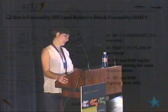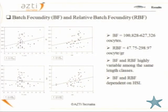Finally, regarding batch fecundity results: both batch fecundity and relative batch fecundity were highly variable among the same length classes, and we think this could be dependent on the hepatosomatic index or condition of the fish, which could in turn be dependent on individual seasonality.